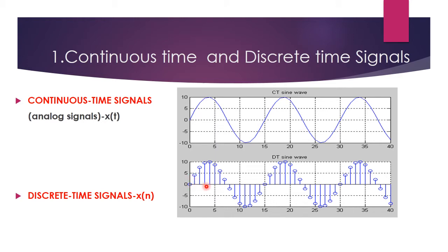Always remember: continuous time signals are analog signals and are represented as x(t), where the variable t is used. For discrete time signals, the variable n is used for representing discrete intervals.